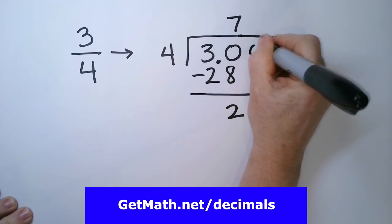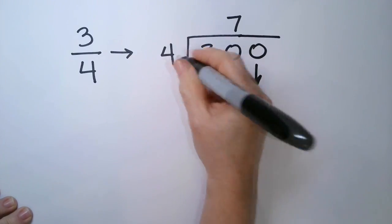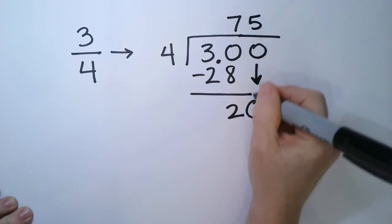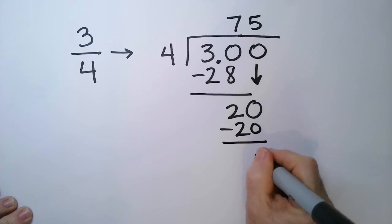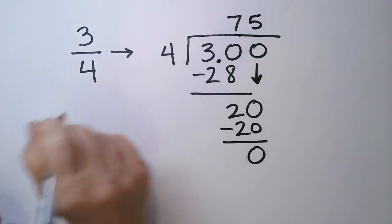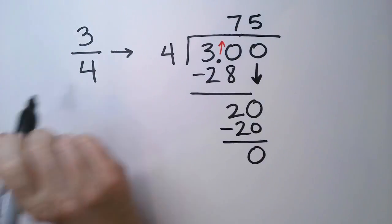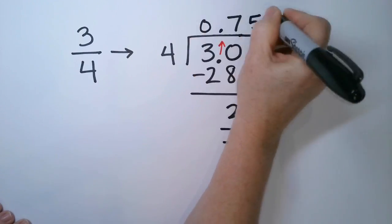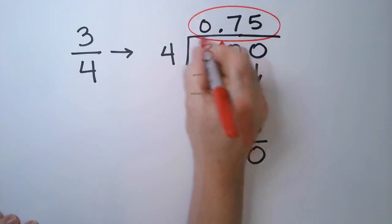I'm going to extend my line, drop another 0. 4 goes into 20 five times. And it's a perfect match, and there's nothing left over. I'm going to push up my decimal point here. So 3 quarters is 0.75.